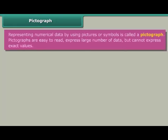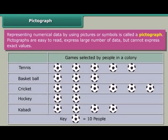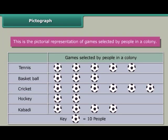Pictograph. Representing numerical data by using pictures or symbols is called a pictograph. Pictographs are easy to read and can express large numbers of data, but cannot express exact values. This is the pictorial representation of games selected by people in a colony.